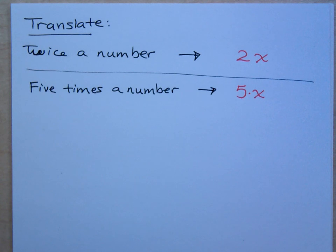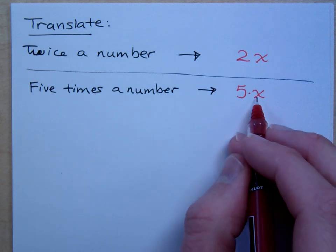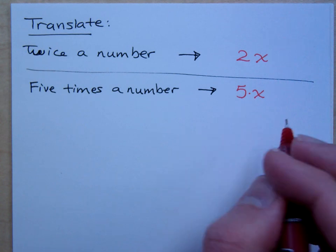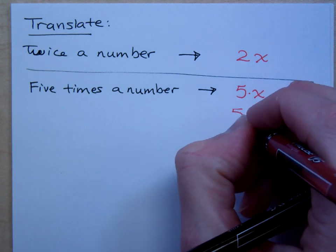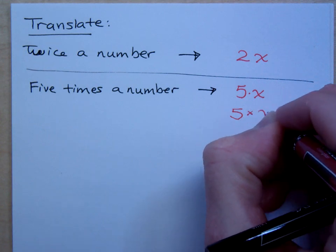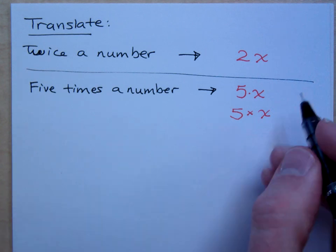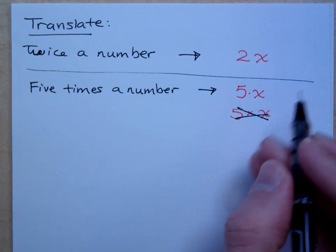And please make sure that you note the difference between the variable x and the multiplication x. You definitely do not want to write, don't write this, 5 times x. Do you see how awkward that is? We don't do that. Don't do that.